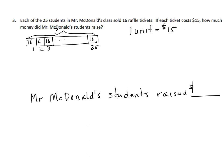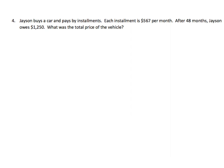And we'll apply that to the one unit equals $15. Let's go on to the next example. Jason buys a car and pays by installments. Each installment is $567 per month. After 48 months, Jason still owes $1,250. What is the total price?